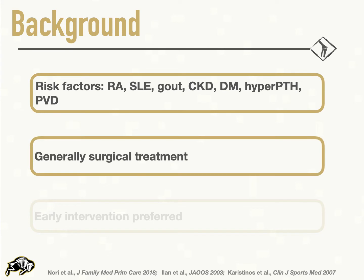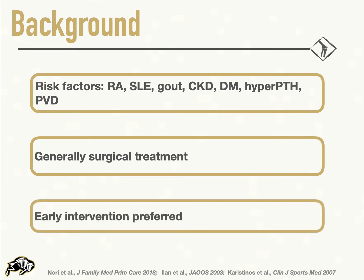Tendon rupture is generally treated surgically with improved functional outcomes. However, incomplete ruptures in certain settings can be managed effectively with non-operative treatment. When surgery is indicated, early repair or reconstruction is preferred in order to avoid tendon retraction and muscle atrophy.